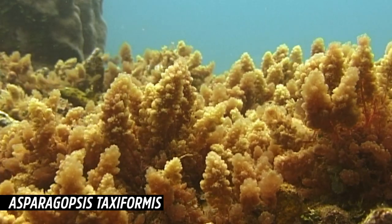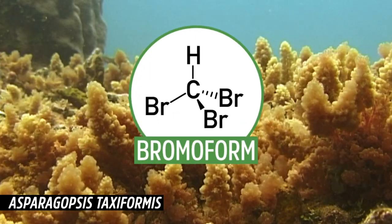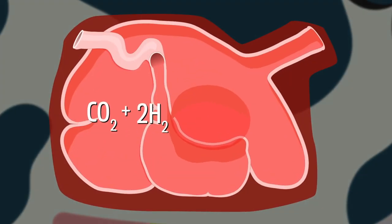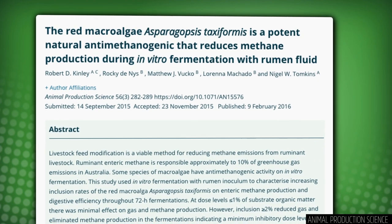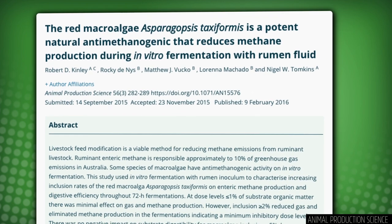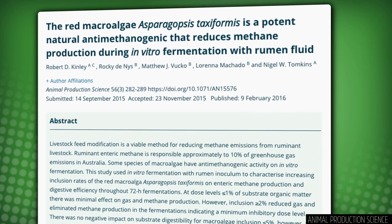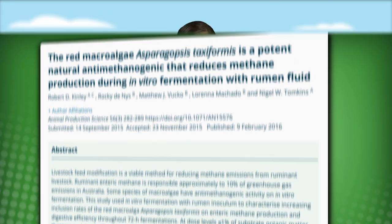which messes with enzymes that would normally turn carbon dioxide and hydrogen into methane in a cow's gut. One study has shown that a solution of 2% seaweed reduced methane gas production from some cow's stomach juice in a test tube by 99%. But a lot more work needs to be done before this is ready for prime time.